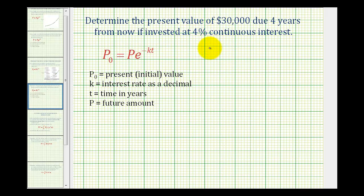Now let's go back to our example and solve the problem. So the future value, or P, is equal to thirty thousand dollars. That's how much we want in the future. t, or time, is four years, and our interest rate as a decimal would be zero point zero four.